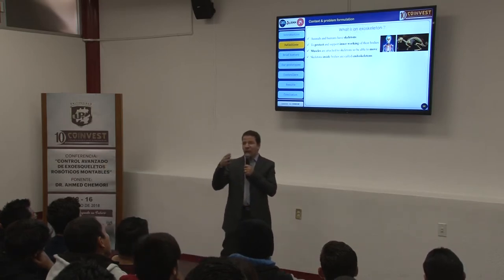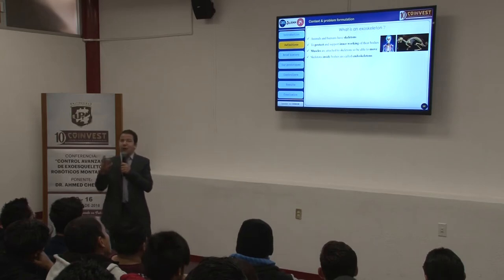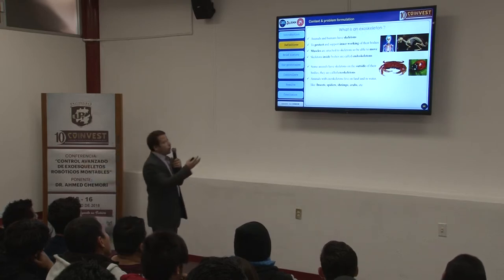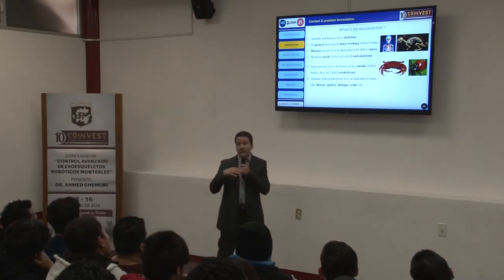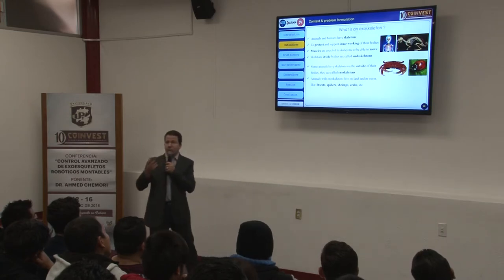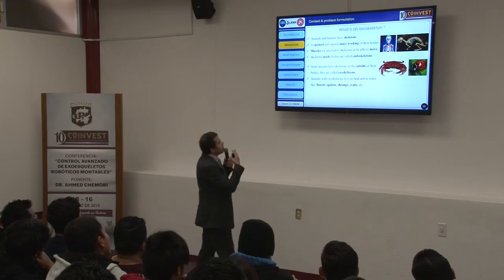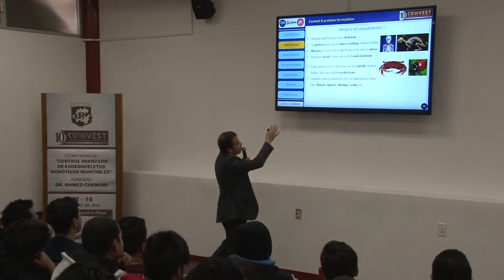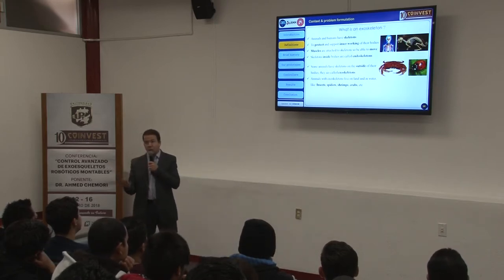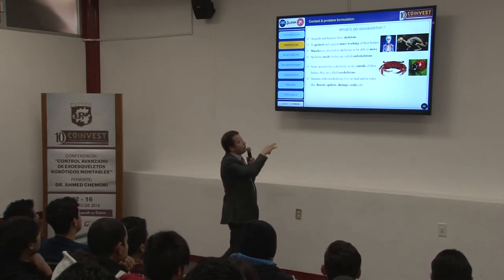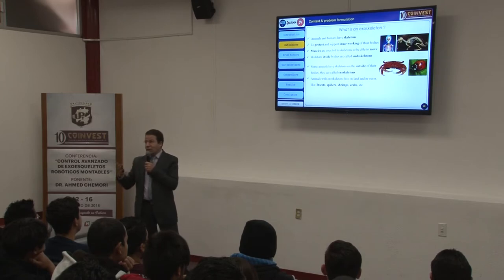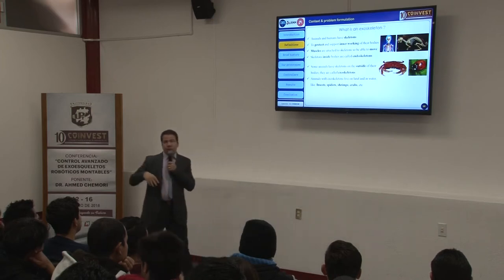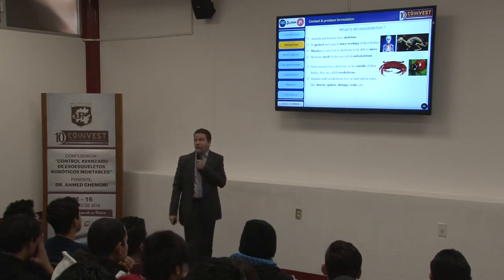Now let's look at other animals very different from humans. Some animals have an outside structure that protects the body — a skeleton outside of their body. If it is outside, we call it an exoskeleton. So the first example is an endoskeleton inside the body, and for these other creatures it is outside the body. You can find many examples: insects, spiders, shrimps, crabs, etc.